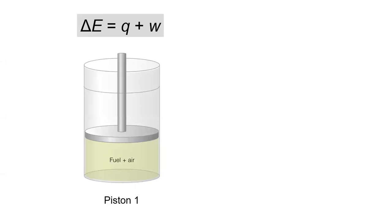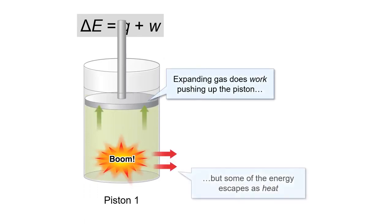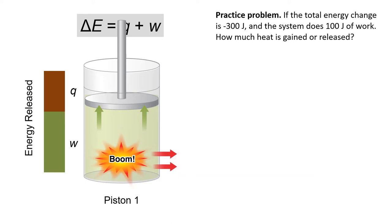Let's imagine a scenario in which a chemical explosion raises a piston. If the total change in energy is negative 300 joules and the system does 100 joules of work, how much heat is gained or released? Try answering this one yourself.